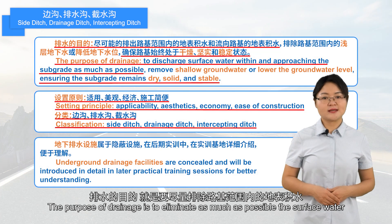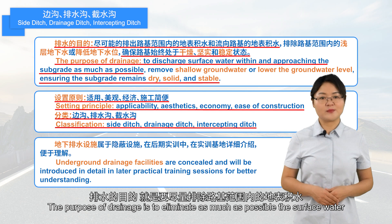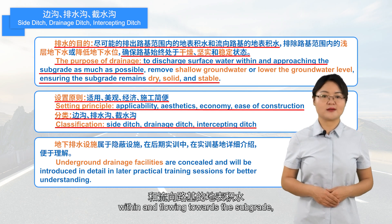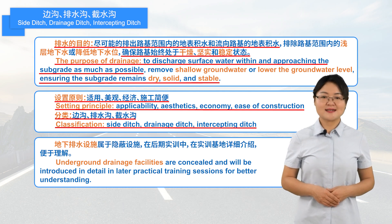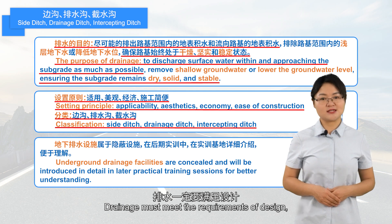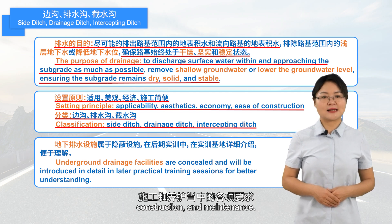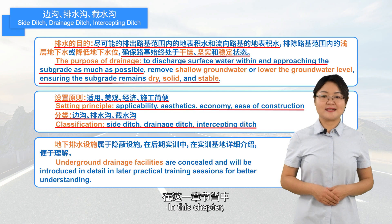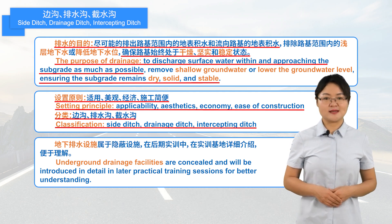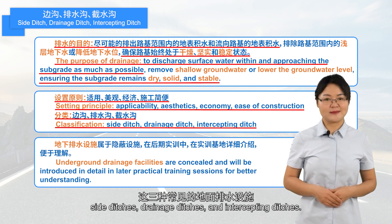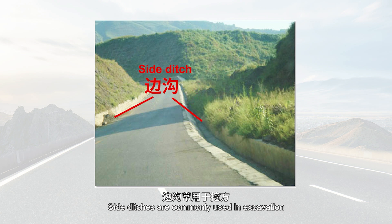The purpose of drainage is to eliminate as much as possible the surface water within and flowing towards the subgrade, keeping the subgrade dry, solid, and stable, thus ensuring its stability. Drainage must meet the requirements of design, construction, and maintenance. In this chapter, we mainly discuss three common types of surface drainage facilities: side ditches, drainage ditches, and intercepting ditches. Side ditches are commonly used in excavation and are set on both sides of the road, with trapezoidal, rectangular, triangular, and shallow dish shapes.